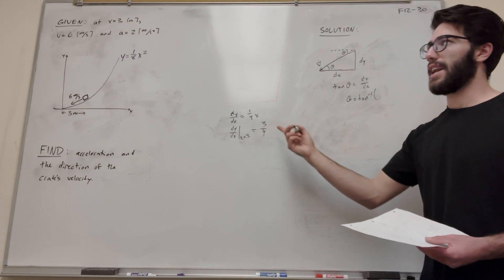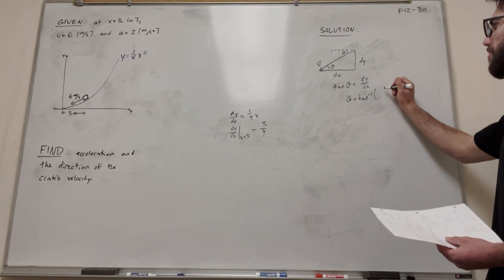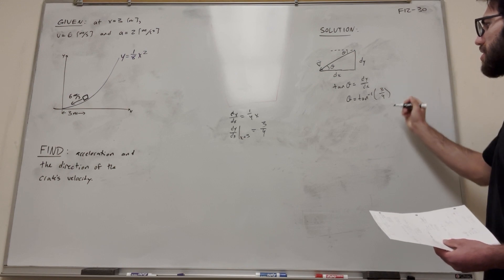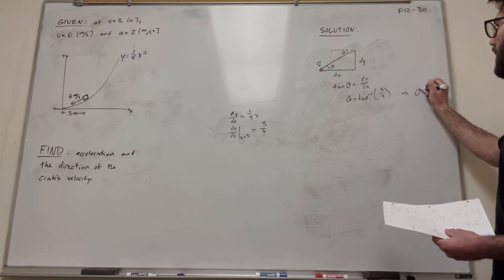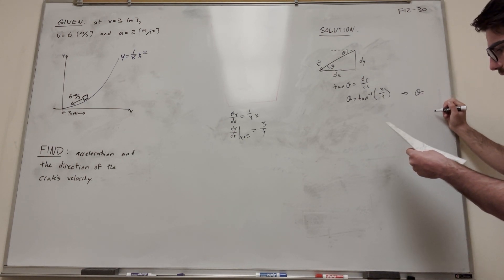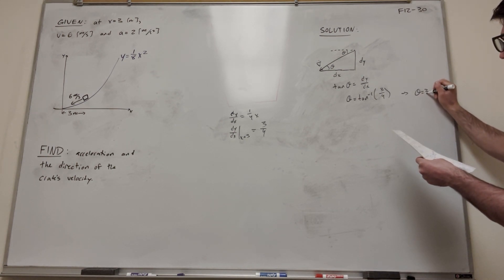So dy dx at x equals 3 is 3 over 4, so we can plug that in here, 3 over 4. So now our theta is the inverse tangent of 3 over 4, and that will bring us to theta equals 36.9 degrees, and it'll be that kind of angle.